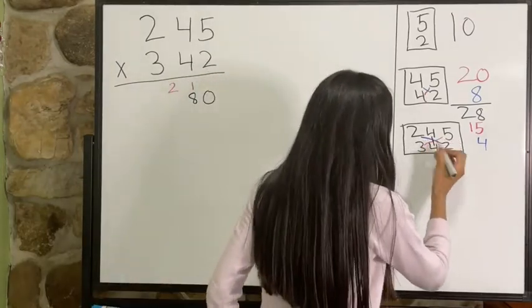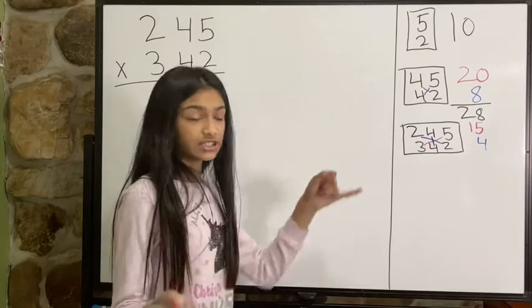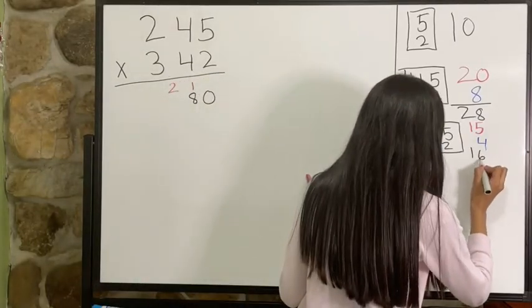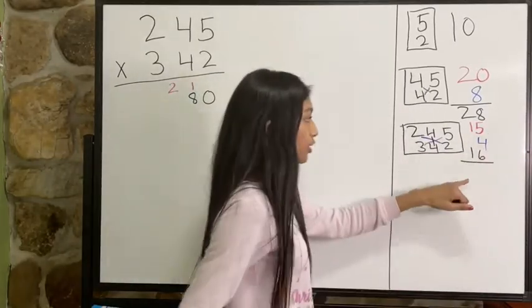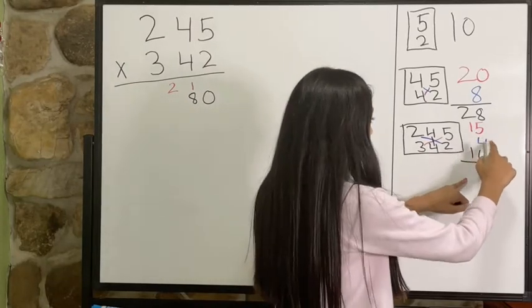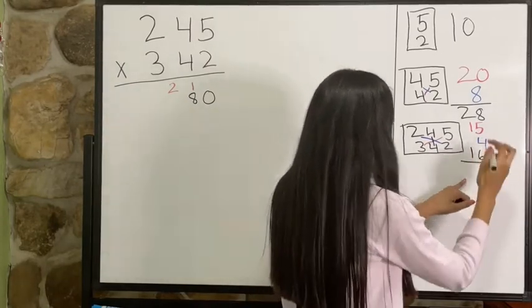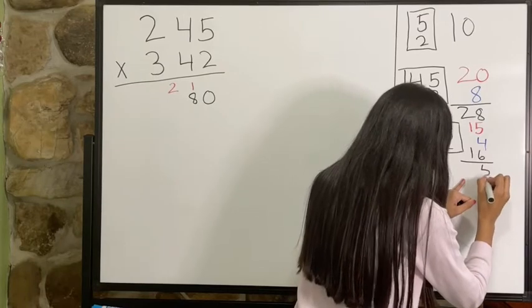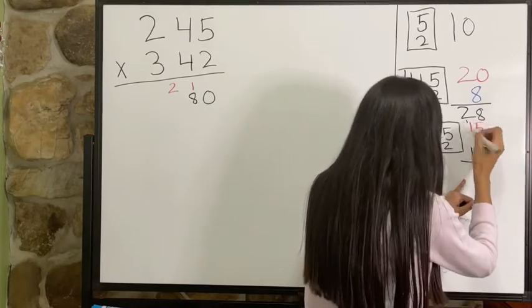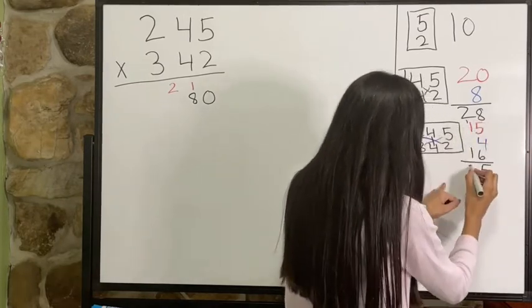And finally last, I'm going to multiply four times four which is 16. I'm going to add them all up. Four plus six is ten, and five, fifteen. Five, one goes on top.